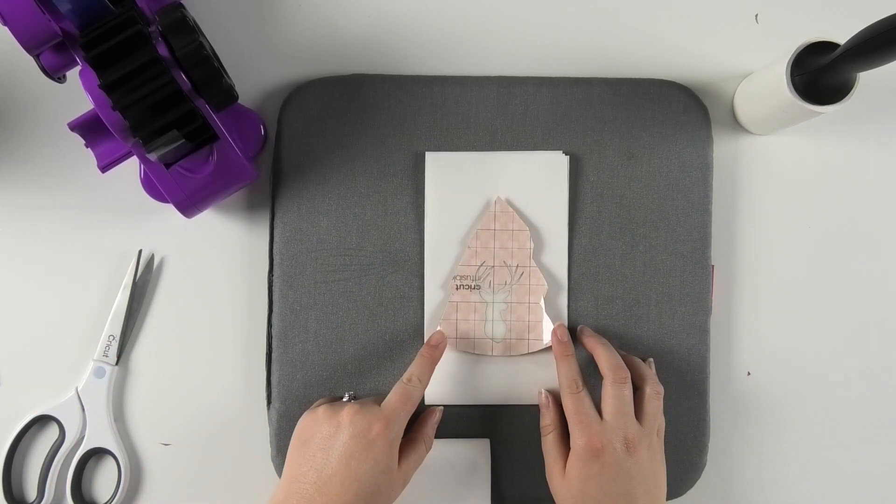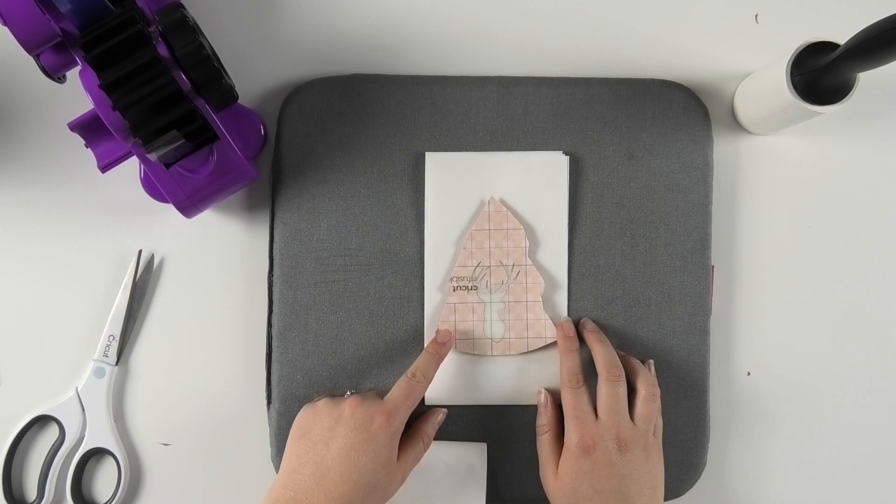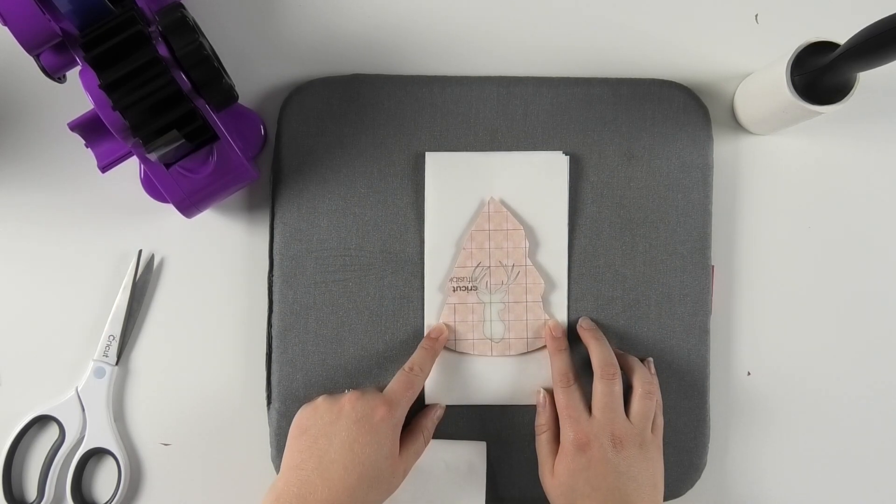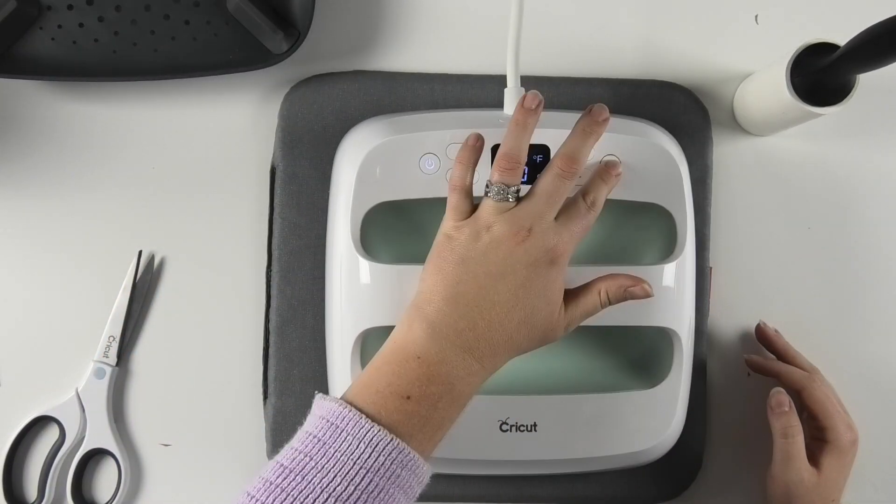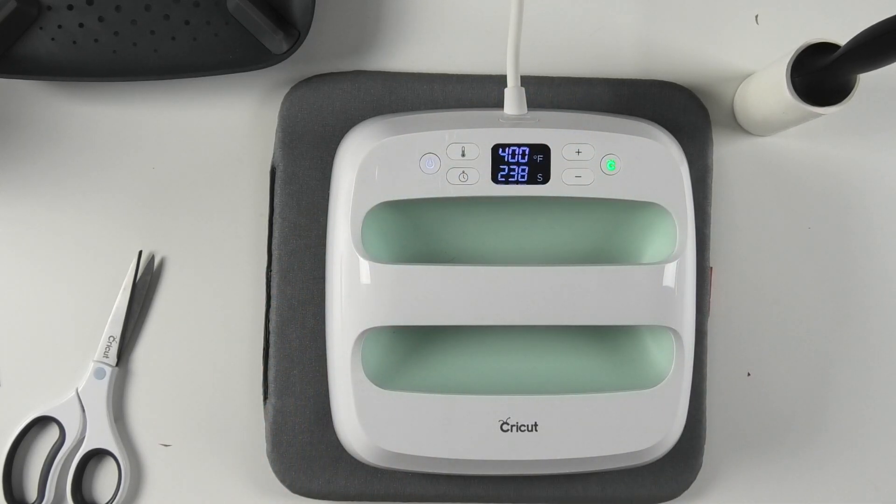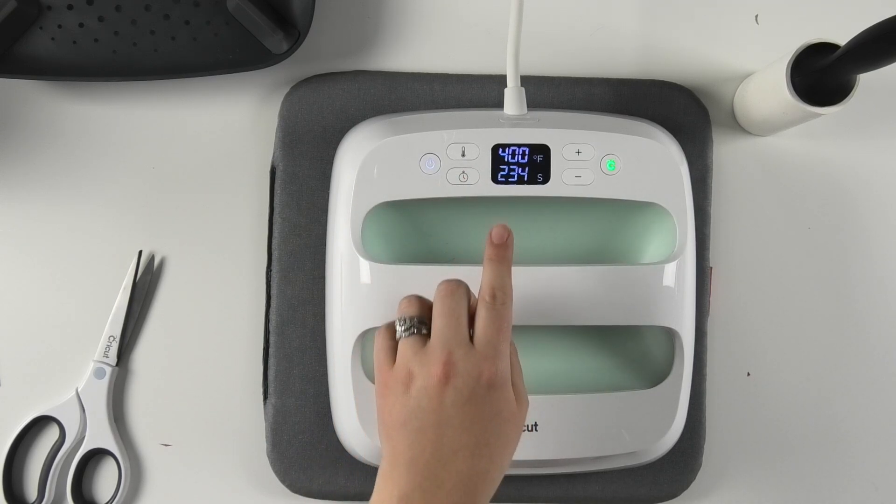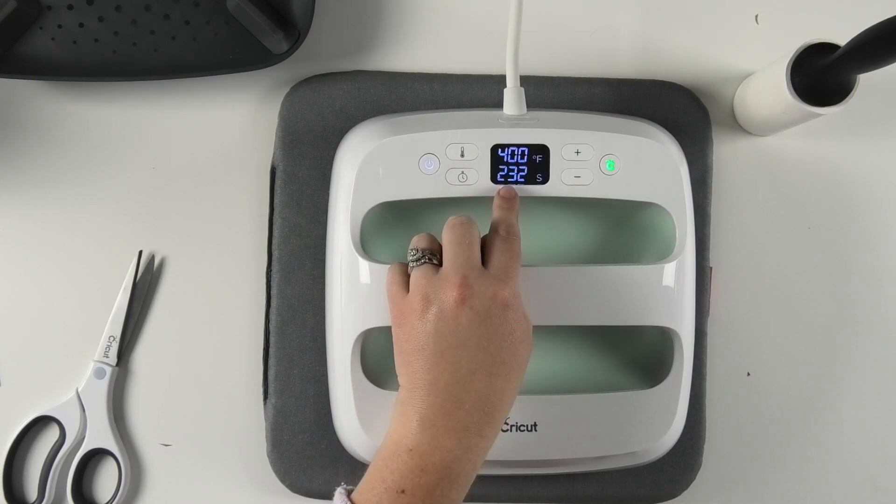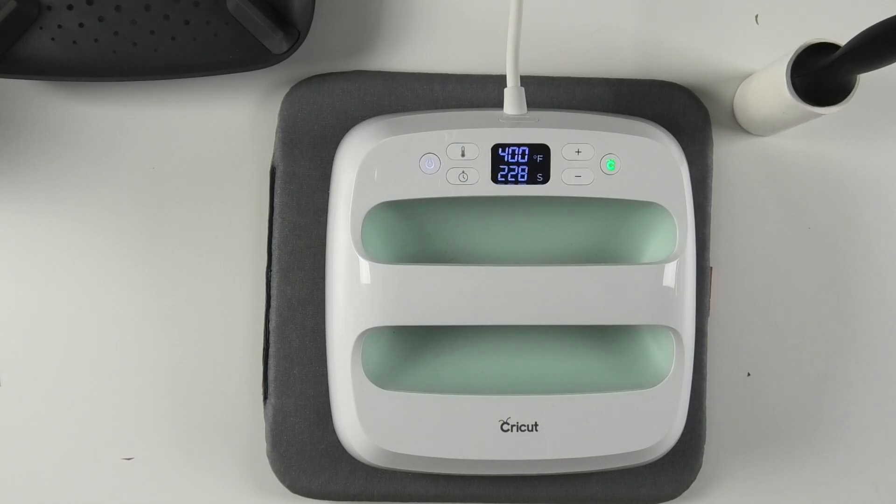I'm not going to worry about taping down these sides because the easy press is going to push these nice and flat. So as long as it's semi-secure, that should be good enough. Then I'm going to take my Cricut easy press and set it on top and press the button to begin applying my infusible ink. According to the Cricut heat guide, I needed 400 degrees for 240 seconds in order to apply my infusible ink to ceramic.